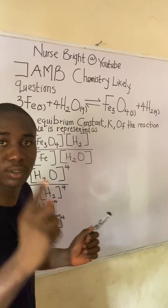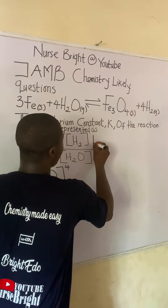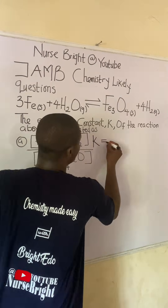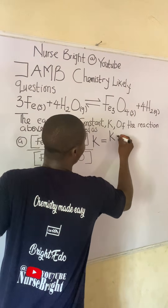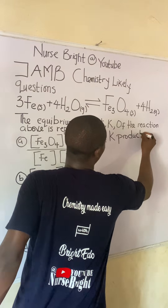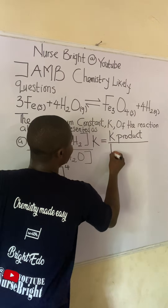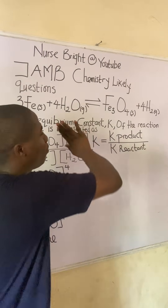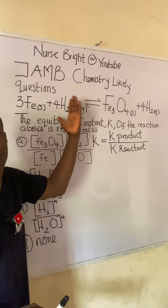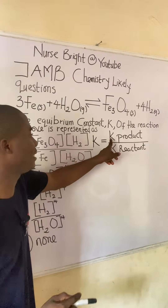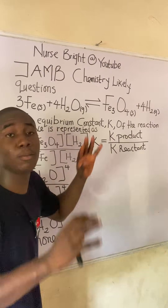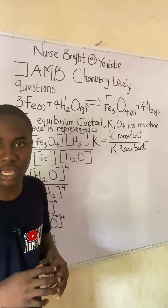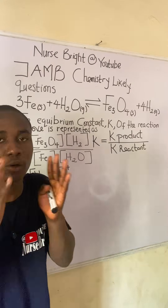This must be noted: the equilibrium constant for any reaction, symbolized as K, is equal to the equilibrium constant expression for your products divided by the equilibrium constant expression for your reactants. A reaction has two sides — the product side and the reactant side — so K equals K_product divided by K_reactant.